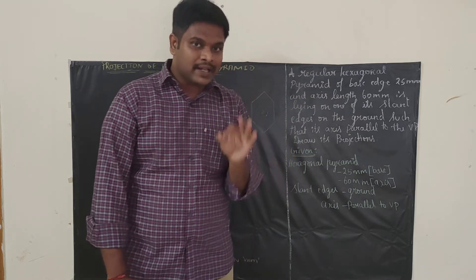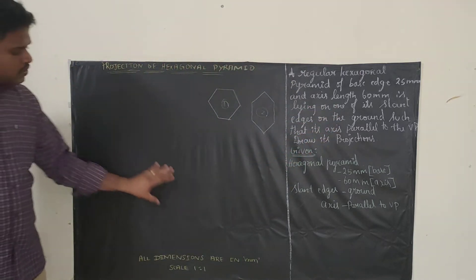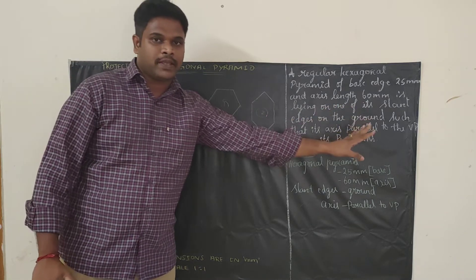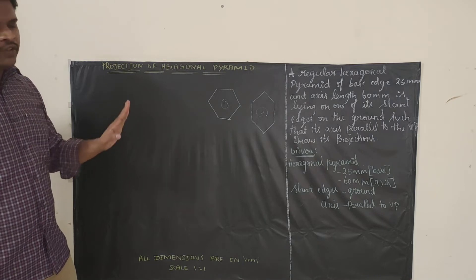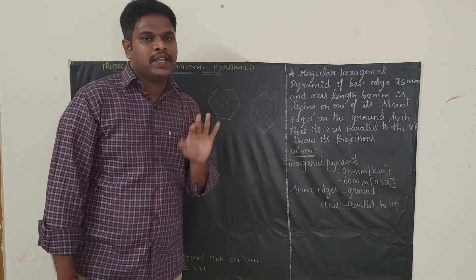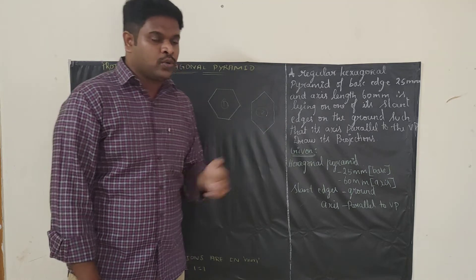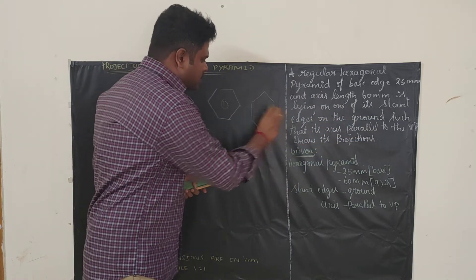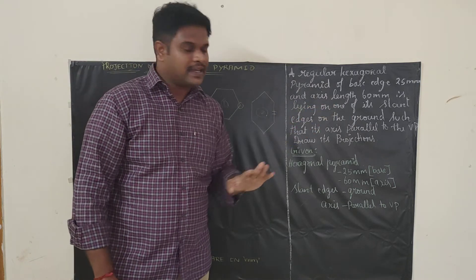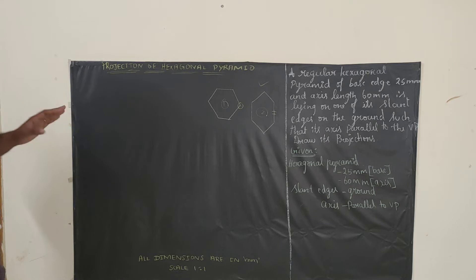Whenever they say the axis is parallel to VP, the opposite condition applies — the axis will be inclined to HP. When the axis is inclined to HP, the base diagram is drawn in HP. So in this case we are going to draw the hexagon base in HP. The hexagon is resting on HP. Next is orientation — there are two types of hexagon orientations we can draw, and we need to identify which one to use based on the question.